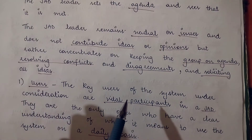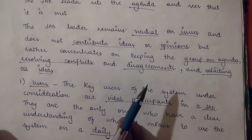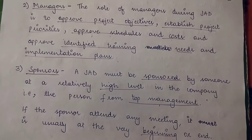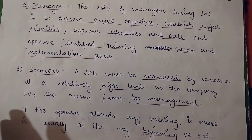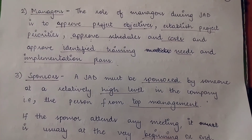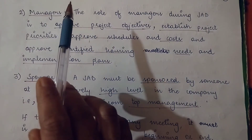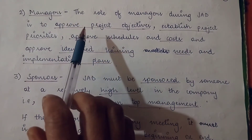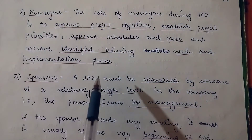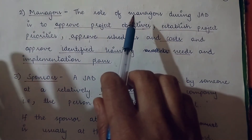Users are very important participants during the JAD session because they have a very clear picture and understanding of the entire system — the expectations from the new proposed system — and they contribute a lot during the session. The next participants are the managers; every organization has a managerial team that participates in the JAD session.